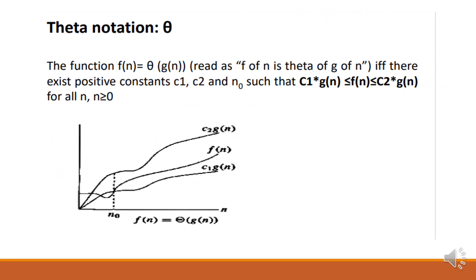Next, Theta notation: f(n) = Θ(g(n)) if and only if there exist positive constants c1, c2, and n₀ such that c1 · g(n) ≤ f(n) ≤ c2 · g(n) for all n ≥ n₀, where n₀ > 0. For f(n), you need to find both the upper limit and lower limit — f(n) must be bounded both above and below by constant multiples of g(n).